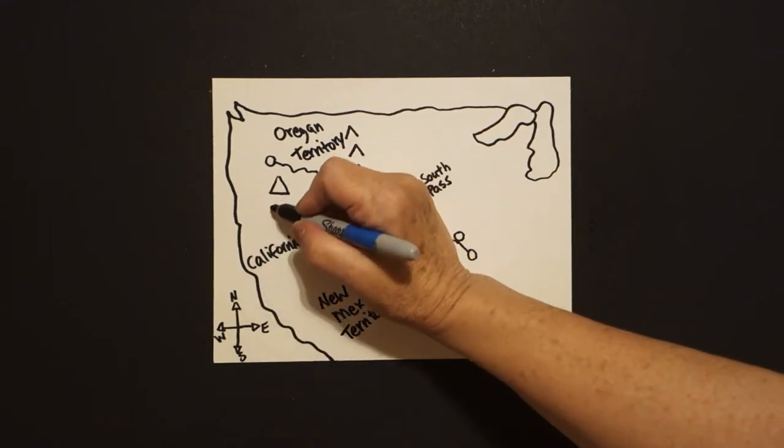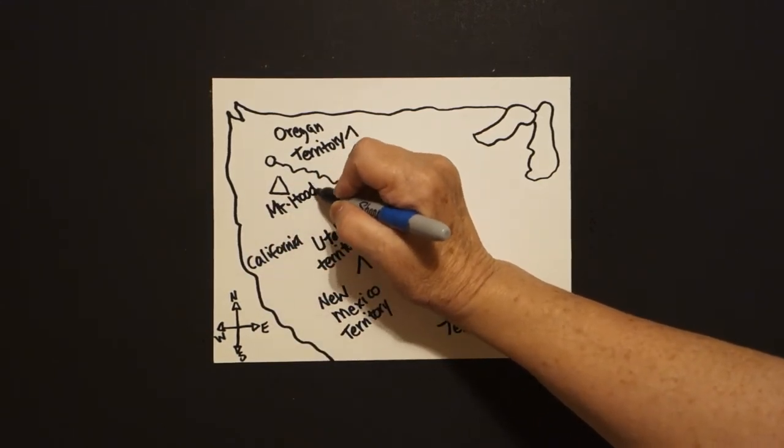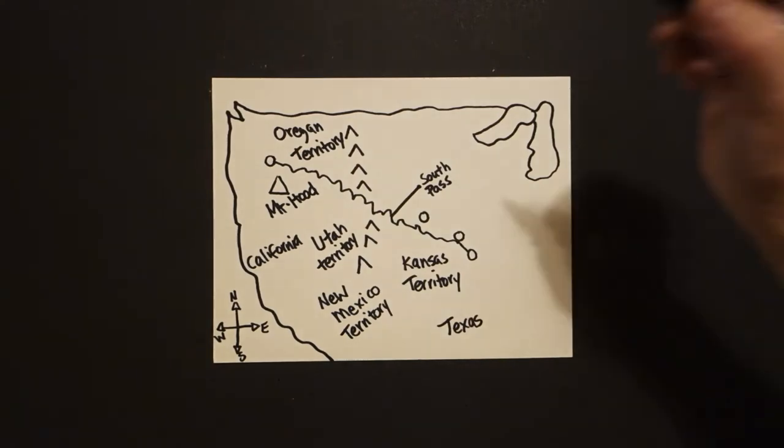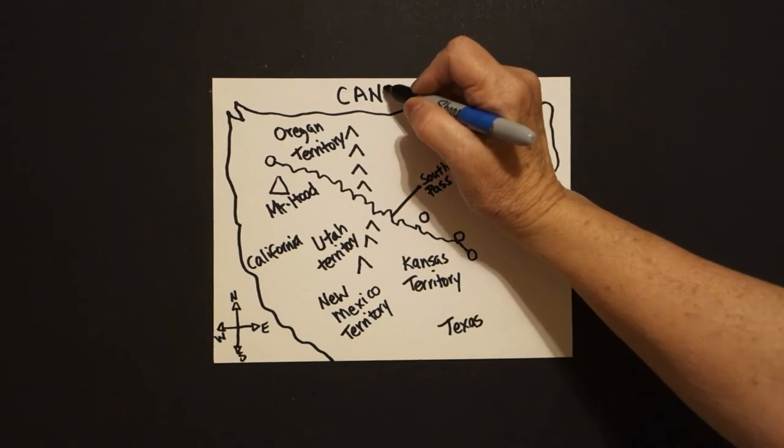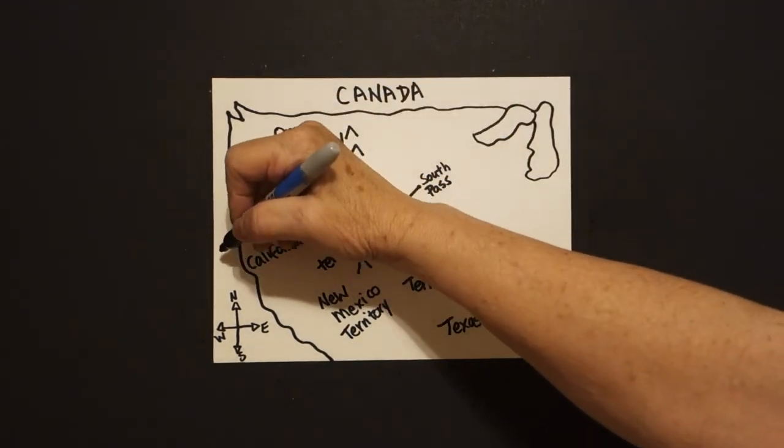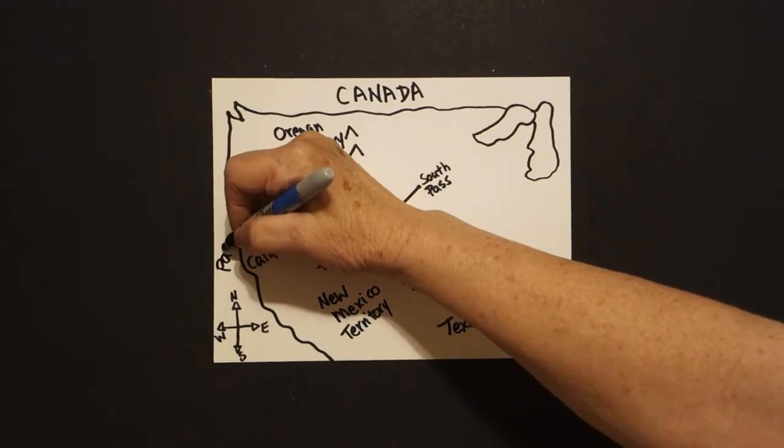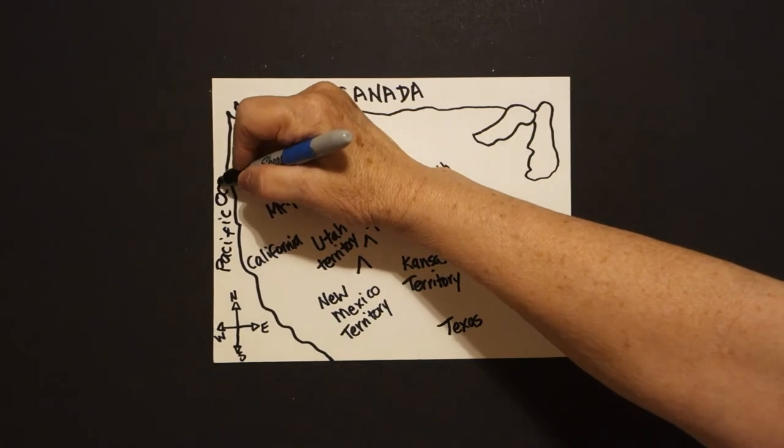This triangle right here is Mount Hood. Now, some of these might be a little bit off, but you get the general idea. Up here, in capital letters, is Canada. And over here is the Pacific Ocean. We need to write that in.